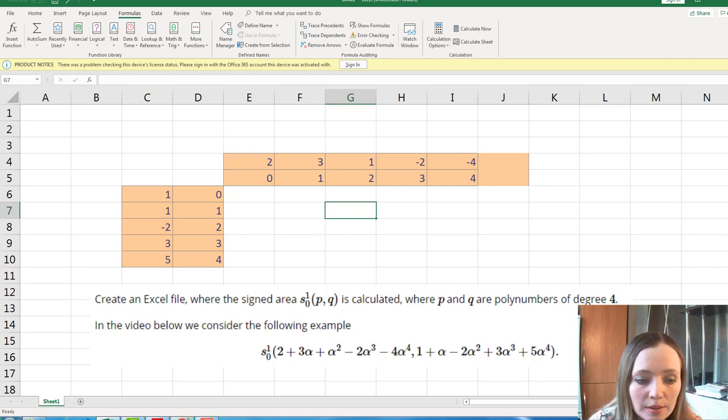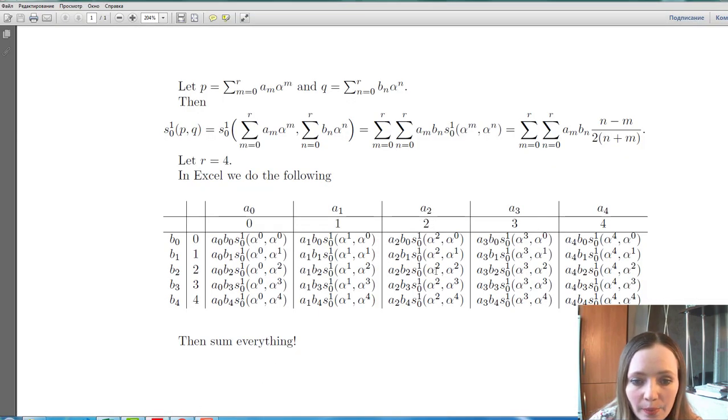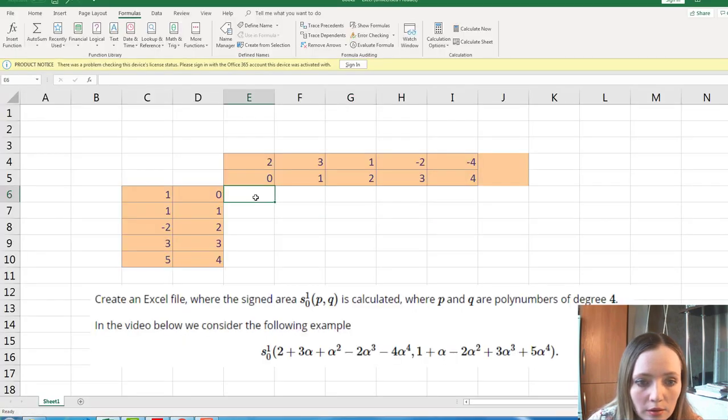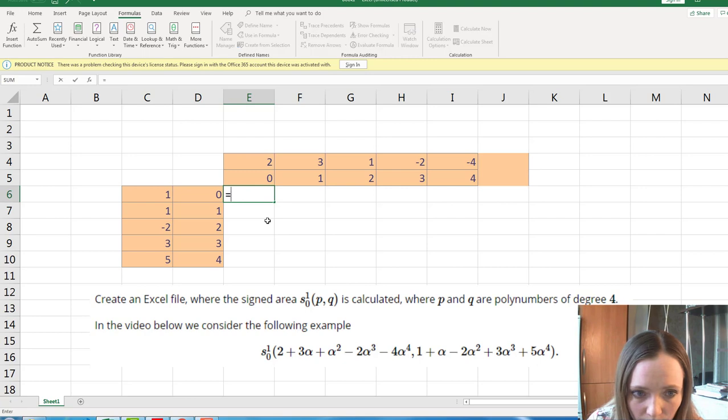And now we will construct this part of the table. We will enter, in this cell, we will enter the product of the coefficients, these coefficients, times the corresponding signed area. Let's start.